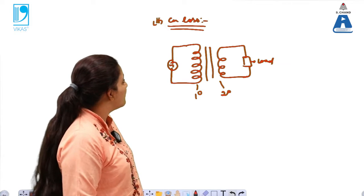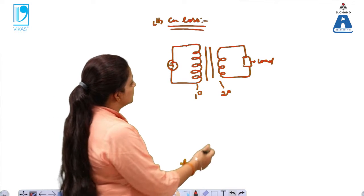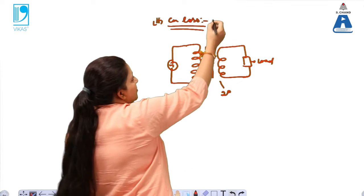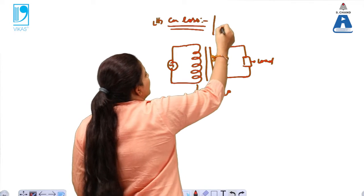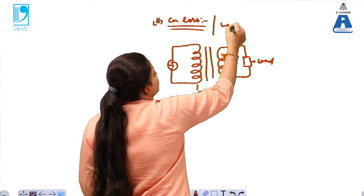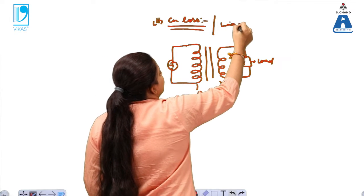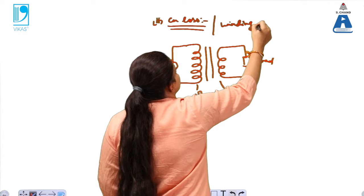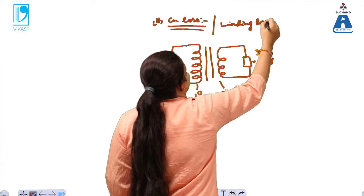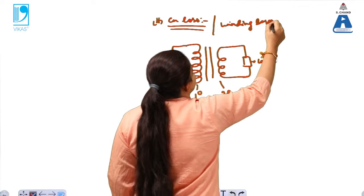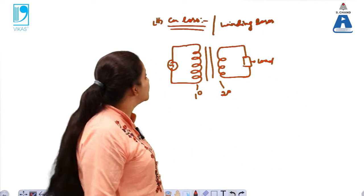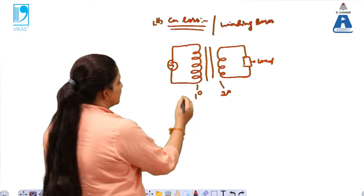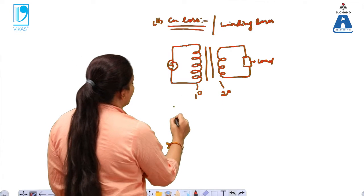In the case of windings there are some losses of current or losses of power. Such losses are known as copper losses. These are also known as winding losses.